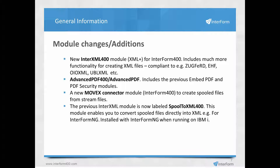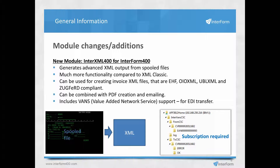Looking at the InterXML 400 module in detail: with previous versions you also had an XML generator, but this new module generates much more advanced XML. For Zugferd output, the XML files are actually embedded into a special PDF file, which can be compiled with normal PDF creation commands and used for normal emailing. Apart from the XML generator, this module also includes support for VANs — Value Added Network Service — so you can use EDI functionality as well.